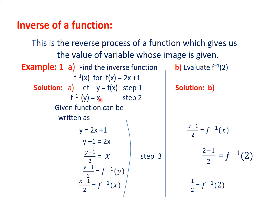We supposed y = f(x), so using this value of y, we get y = 2x + 1. Now we separate x, making x the subject of the formula. Take the 1 over to the other side with a negative sign, then divide by 2. We are left with x = (y − 1)/2. We have made x the subject of the formula.